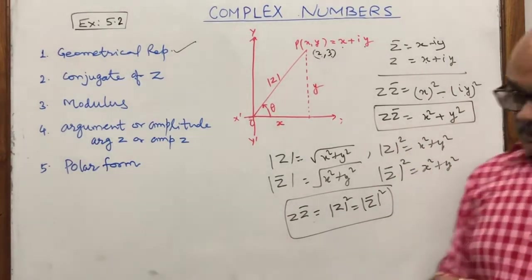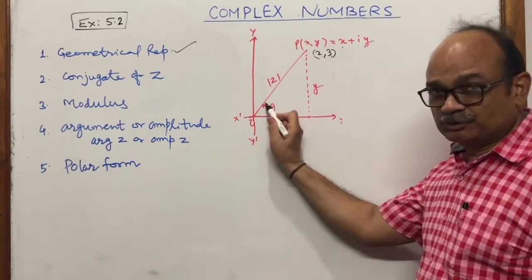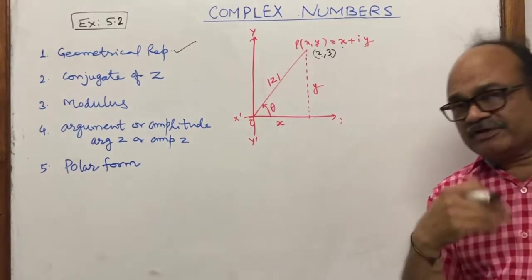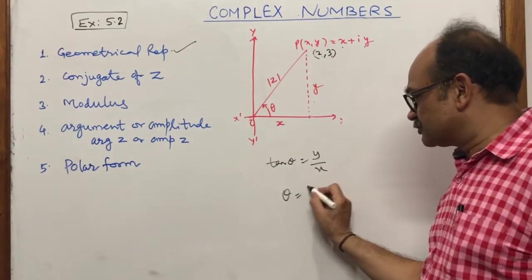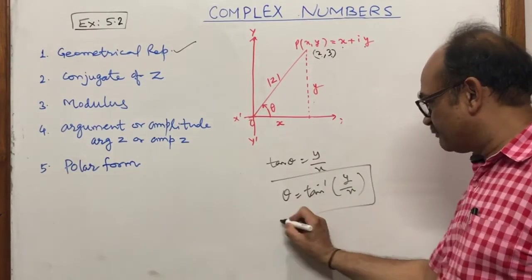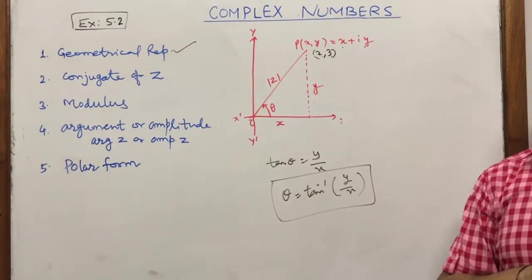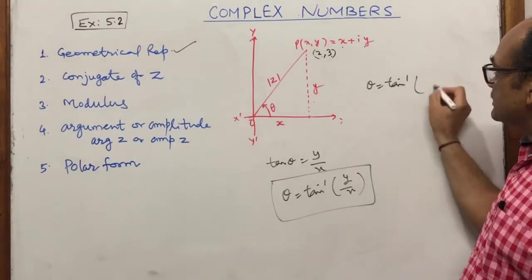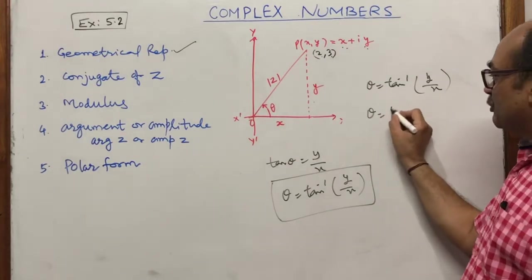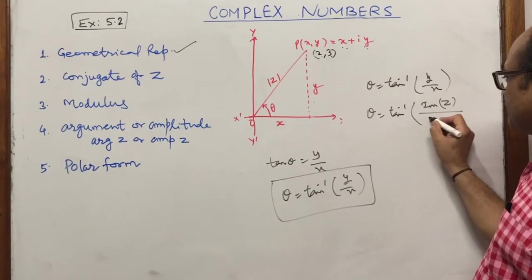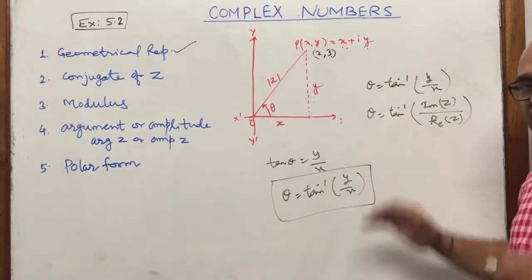The next important point is argument or amplitude. Looking at the Argand diagram, the angle theta from the positive x-axis to the hypotenuse (the line representing z) is given by tan θ = perpendicular/base. So θ = tan⁻¹(y/x), where y is the imaginary part and x is the real part. This angle θ is known as the amplitude or argument of the complex number z.